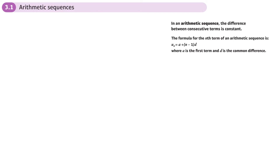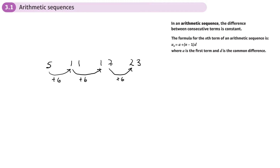This is the first section on the chapter sequences and series, and this is all about arithmetic sequences. An arithmetic sequence is one that goes up and down by a fixed number each time. For example, 5, 11, 17, 23 — this one goes up in sixes. What really makes a sequence is the first term and the jump between each number. If you know the start term and the jump, whether it goes up or down, you can generate the whole sequence.